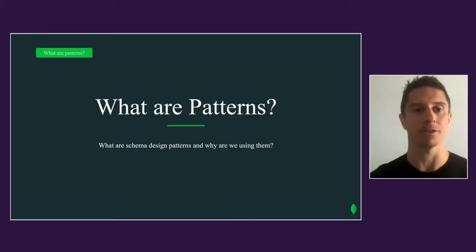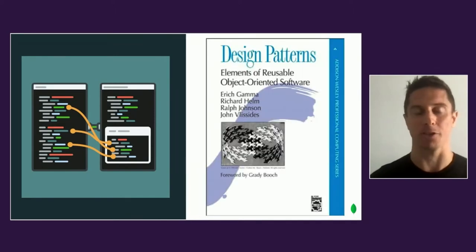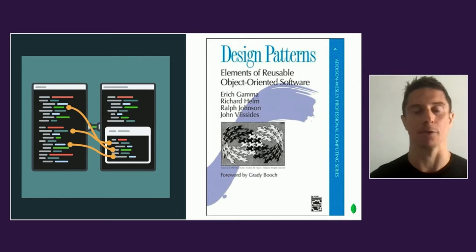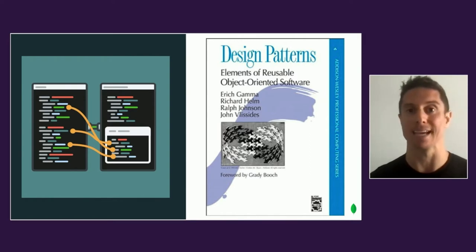So first off, what is a pattern? Well, most people when they think about patterns think about this book. This book is by a group of people called The Gang of Four. It was originally designed to talk about software design patterns — how it is that software should be designed in the modern world using object-oriented programming. And it got abstracted to things like design patterns in databases, which is going to be our focus today.